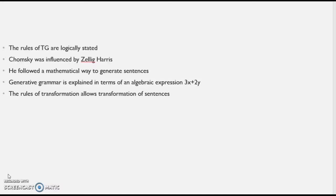For example, we generate the sentence 'the boy chased the dog' and then apply the transformational rule to transform it into a passive form: 'the dog was chased by the boy.' This is applying the rules of transformation to change the sentence from one form to another — a logical, mathematical construction.